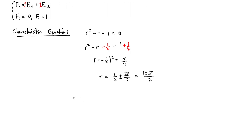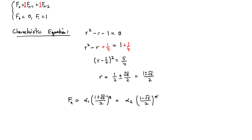At this point we can write down the general closed form. F_n = α_1 · ((1 + √5)/2)^n + α_2 · ((1 − √5)/2)^n. Now we need to solve for these unknown alpha coefficients, and to do that we use the two initial conditions.